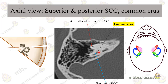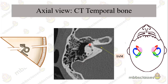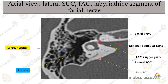As we move down, we see the crus commune, formed by the non-ampullated ends of the superior and posterior semicircular canal. Moving further, the semicircular canals appear as three dots. The bony canal on the posterior aspect of the petrous bone is now visible — this is the internal auditory canal. Its medial opening opens into the posterior cranial fossa on the cerebellar surface of the temporal bone, and the lateral end is called the fundus. Through the internal auditory meatus — a nerve conduit — pass the facial nerve, cochlear nerve, and the superior and inferior vestibular nerves.